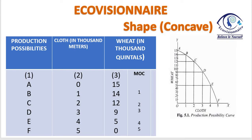Looking at the PPC curve on the right side, we are showing wheat on the Y-axis and cloth on the X-axis. Since resources are fixed, when we reduce resources from wheat, only then can cloth be produced. So it is downward sloping — negatively sloped. One good has to be reduced to increase the other. You can see wheat coming down from 15 while cloth increases from 0 to 5. That is why this curve is downward sloping.